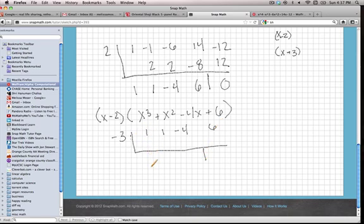Let's go ahead and drop down the 1. Negative 3 times 1 is negative 3. 1 minus 3 is negative 2. Negative 3 times negative 2 is 6. Negative 4 plus 6 is 2. And negative 3 times 2 is negative 6. So our remainder is 0. So negative 3 does indeed factor out.